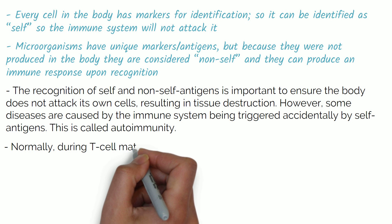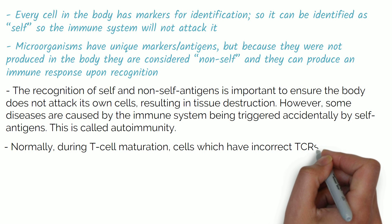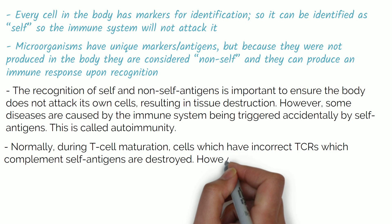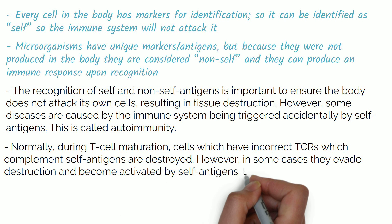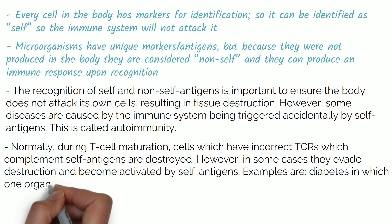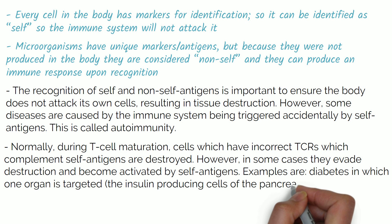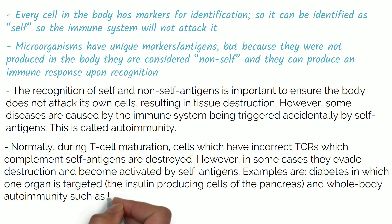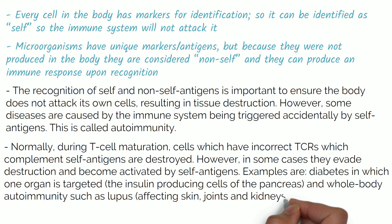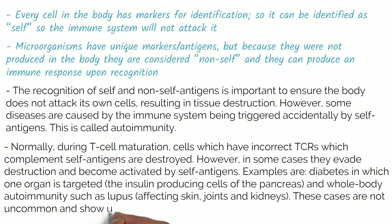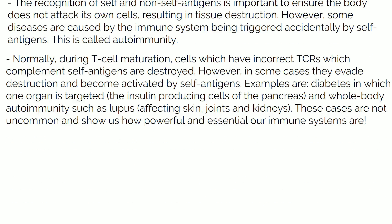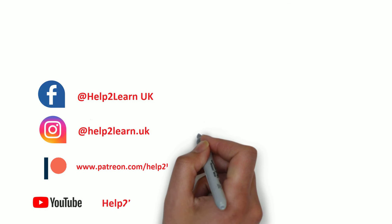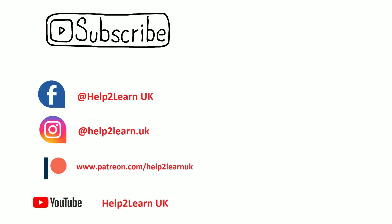Normally during T-cell maturation, cells which have incorrect T-cell receptors that complement self-antigens are destroyed. However, in some cases they evade destruction and become activated by self-antigens. Examples of illnesses caused by this are diabetes, in which one organ is targeted — the insulin-producing cells of the pancreas — and whole body autoimmunity such as lupus, which affects skin, joints and kidneys. These cases are not uncommon and show us how powerful and essential our immune systems really are. Thank you for watching today's video. We hope to see you next week to continue looking at antibodies and vaccines in fighting infectious disease.